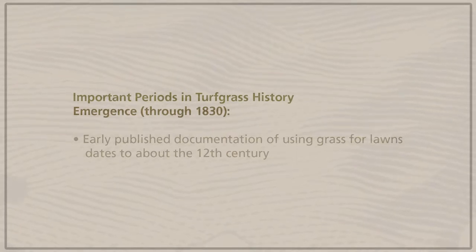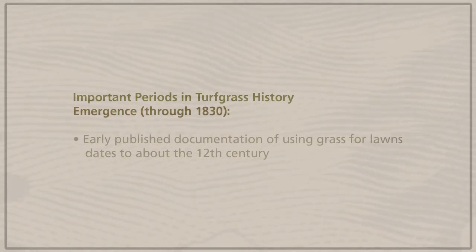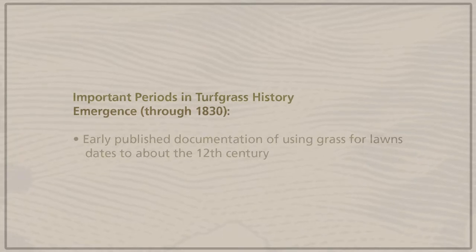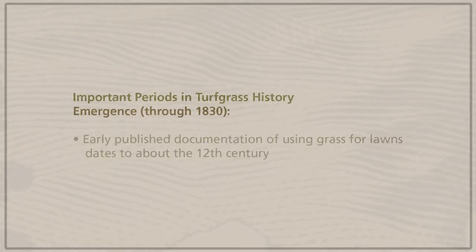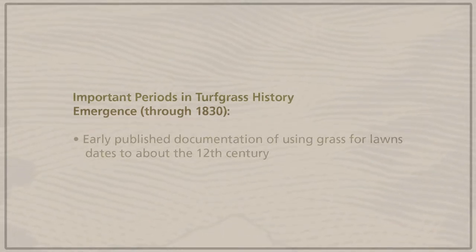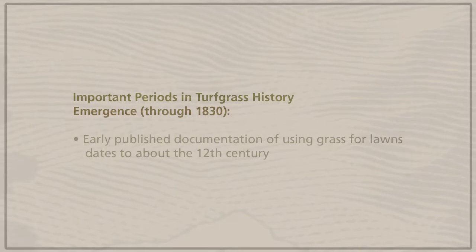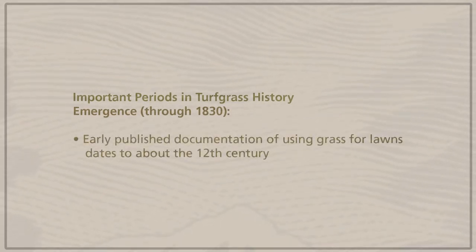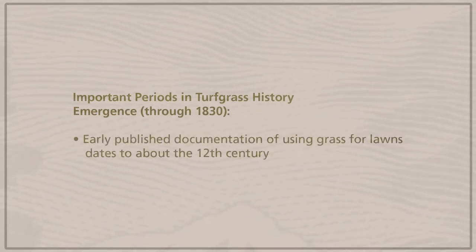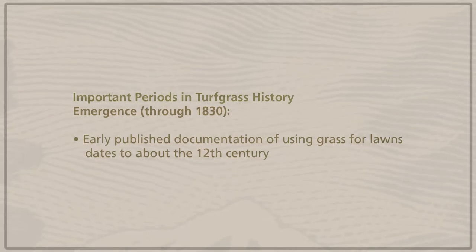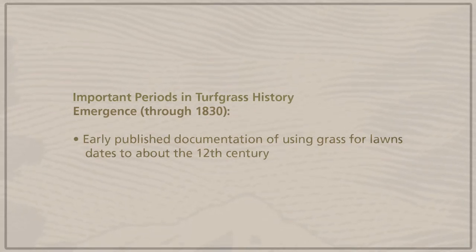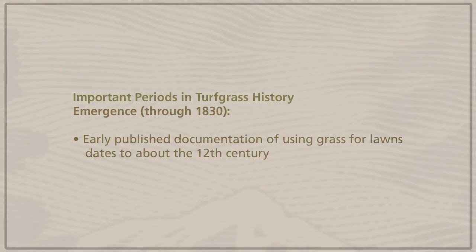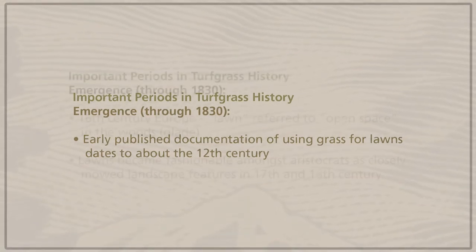Up until 1830, there wasn't a lot going on in turf grass management in the United States. Looking at its early history, the first published documentation of using grass for lawns dates to about the 12th century. So we know that the use of grasses for lawn purposes is pretty old.